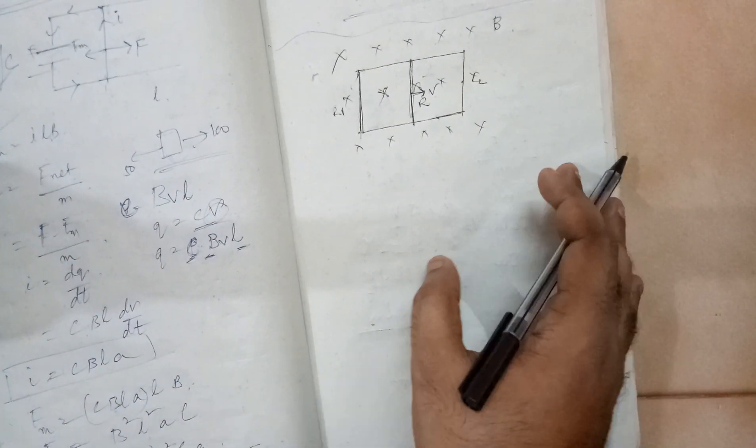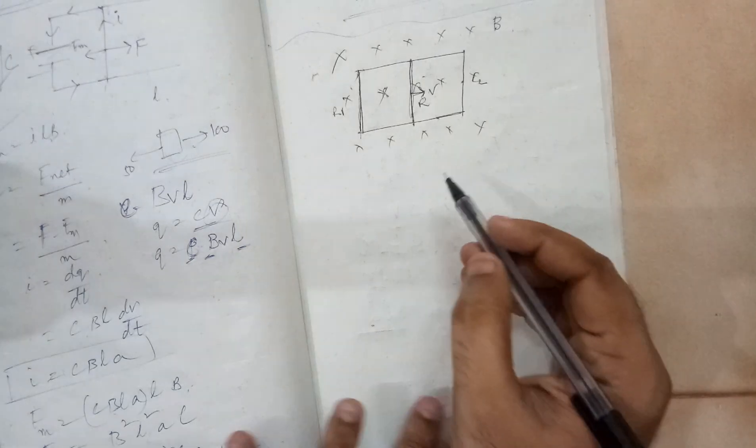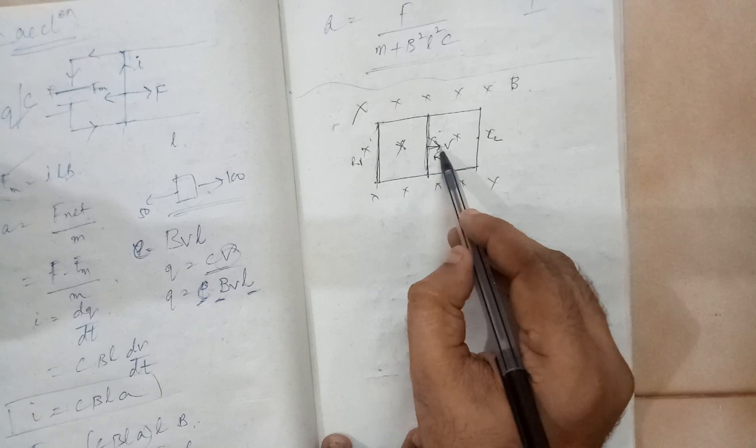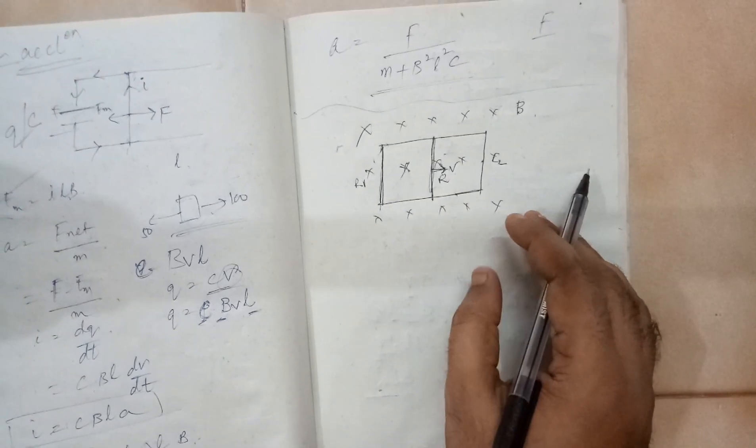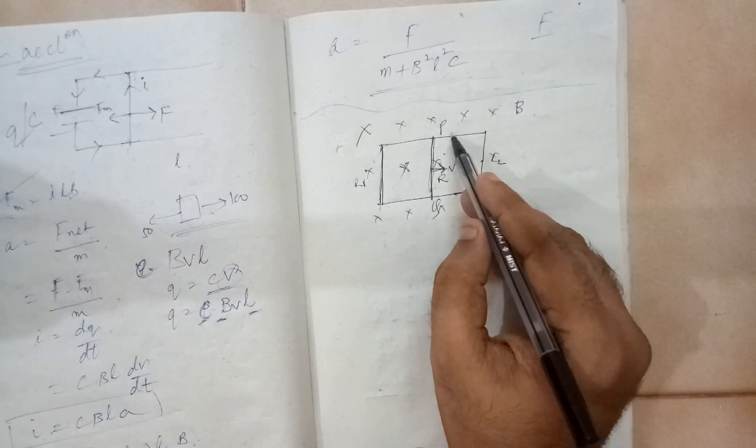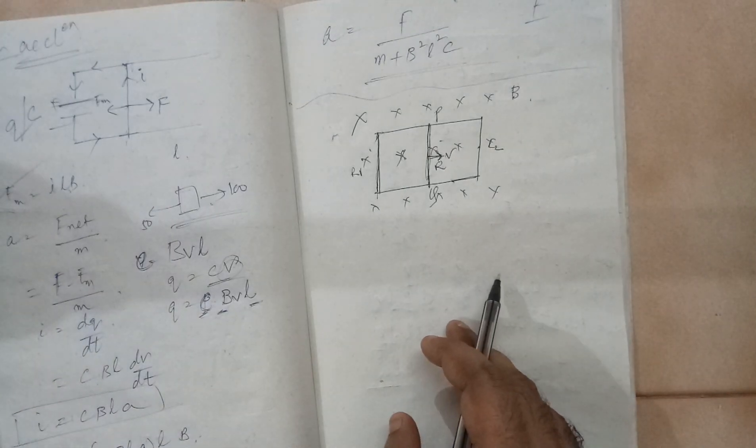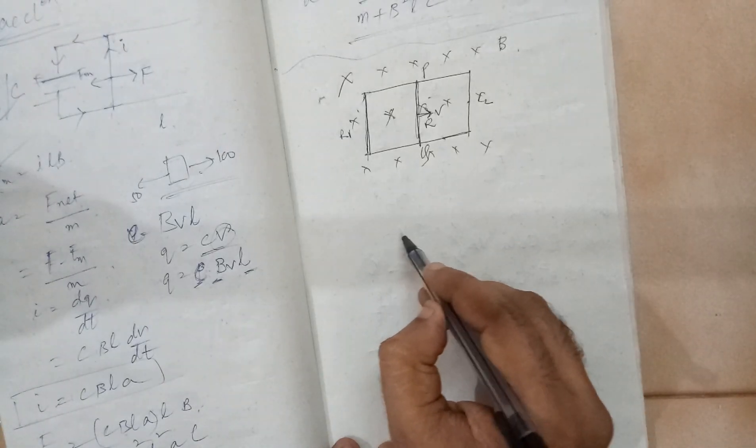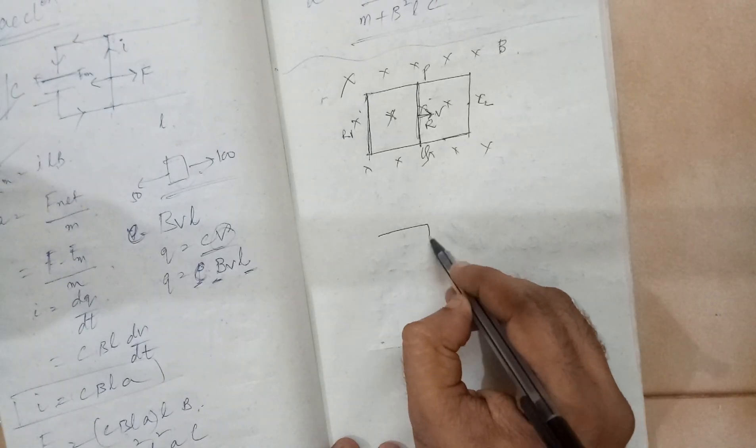I will draw the actual circuit. See, when the magnetic field is like this and it is moving towards right, in the previous videos we have discussed that if you take this point as P and Q, P will be at higher potential. So this circuit will look something like this.